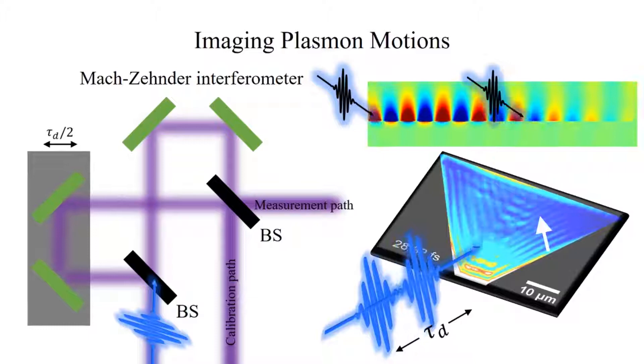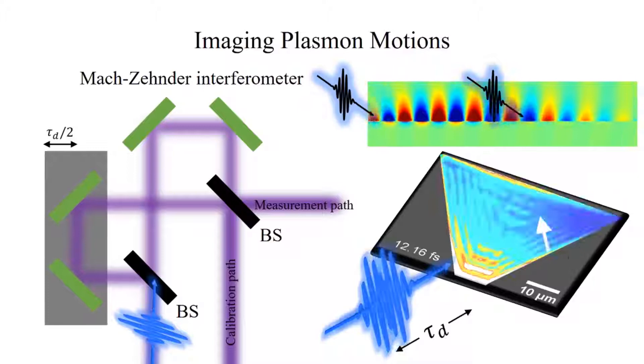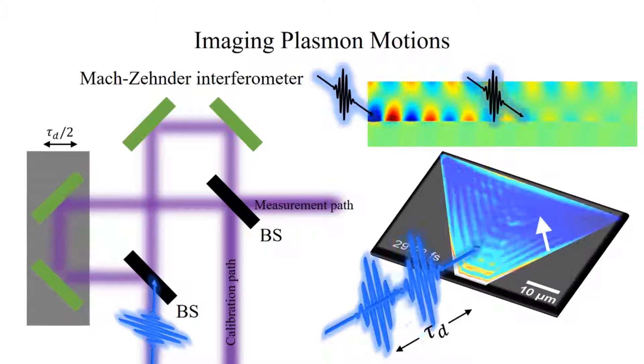This interference pattern then moves in space as we change the time delay between the pump and probe beams, because the regions of constructive and destructive interference depend on their relative delay. Therefore, the probe beam can detect the motion of the plasmon field excited by the pump beam.